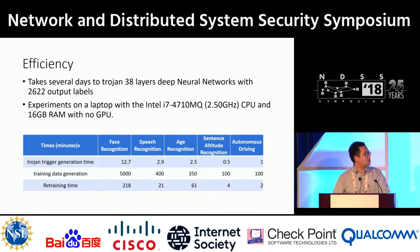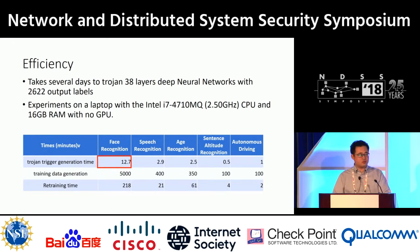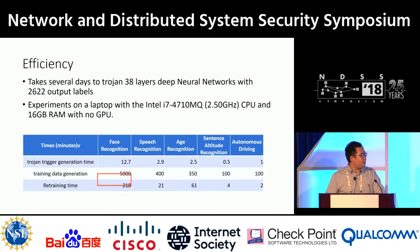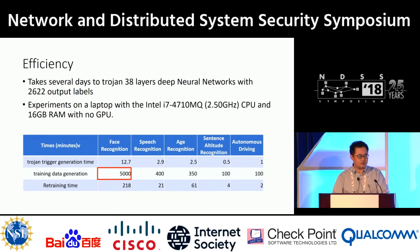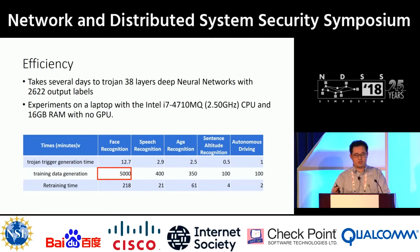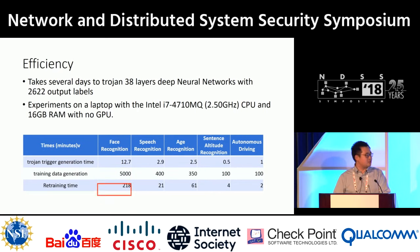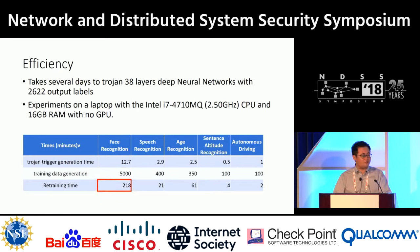We also show our efficiency. For a 38-layer deep neural network, generating the backdoor trigger requires less than 13 minutes. For a neural network with over 2,000 output labels and original training data of over 2 million images, we only need 5,000 minutes to reverse-engineer enough data to inject the backdoor behaviors. And for this 38-layer deep neural network, we only need less than 4 hours to backdoor it.